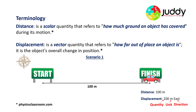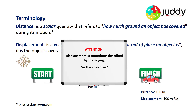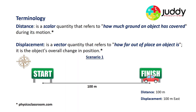There's a quantity of 100, a unit of measurement in metres, and a direction to the east — this is a vector quantity. Displacement is sometimes described by the saying 'as the crow flies,' literally the shortest distance from the start to the finish. The crow flies directly from the start and travels to the finish in the shortest possible distance, representing a displacement of 100 metres east, comparing its finishing position from that of its starting position.